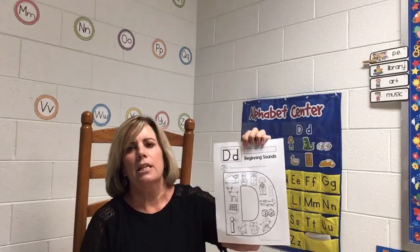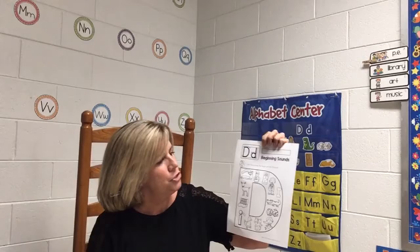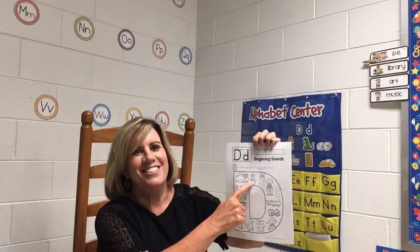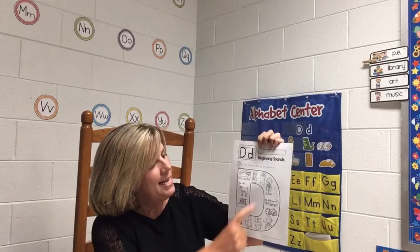Here is your paper for today. Up at the top is an uppercase D and lowercase D. There's a space to write your name. Let's look at the pictures. This is a very tricky one — it's called a diorama. So yes, it begins with a D, you're going to color that. Door — yes, we're going to color that. He is a doctor — we're going to color the doctor.